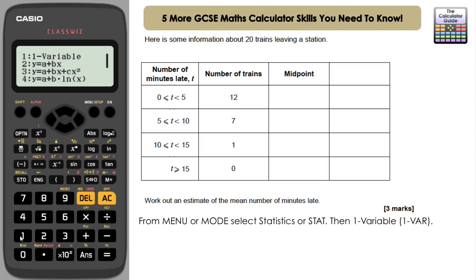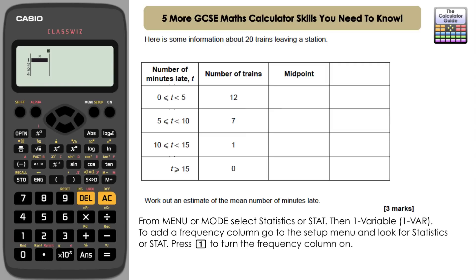Okay, so into the menu or into mode, and then you want to choose 2 statistics, then 1 for one variable or one bar. Now if you don't have a frequency column set up ready to go on this, we're going to need one. So it's shift and setup, find statistics or stats, and then we want to press 1 for on, turn the frequency on. Go back and we've got a frequency table ready that is going to represent the number of trains.